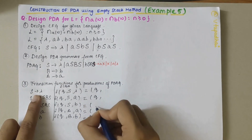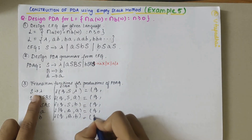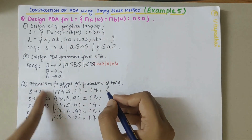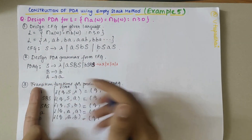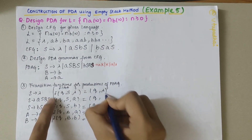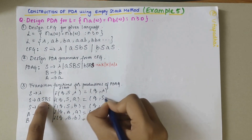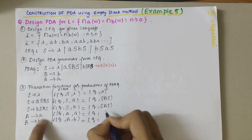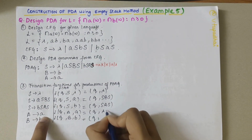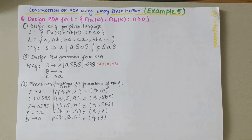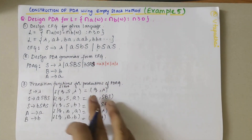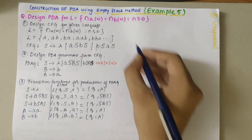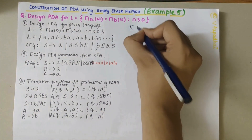Since we are using the empty stack method we stay in the same state Q. The right-hand sides of the transitions are: for S→λ we push lambda; for S→ASBS we push SBS; for S→BSAS we push SAS; for A→a we push lambda; and for B→b we push lambda. This defines the transition functions for the given PDA grammar.